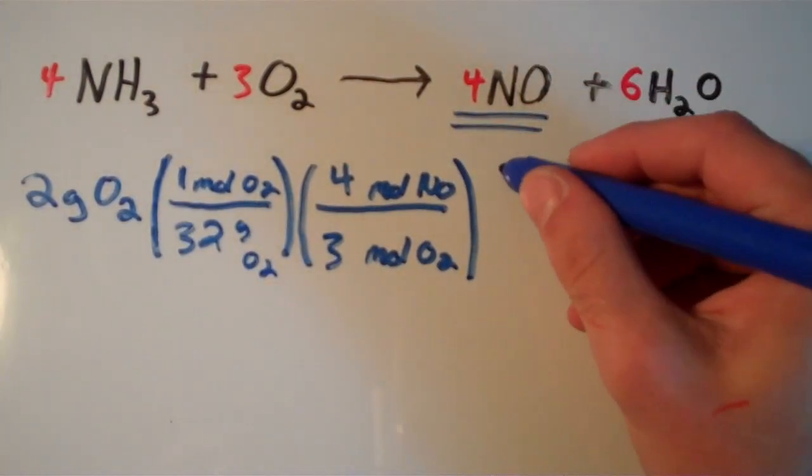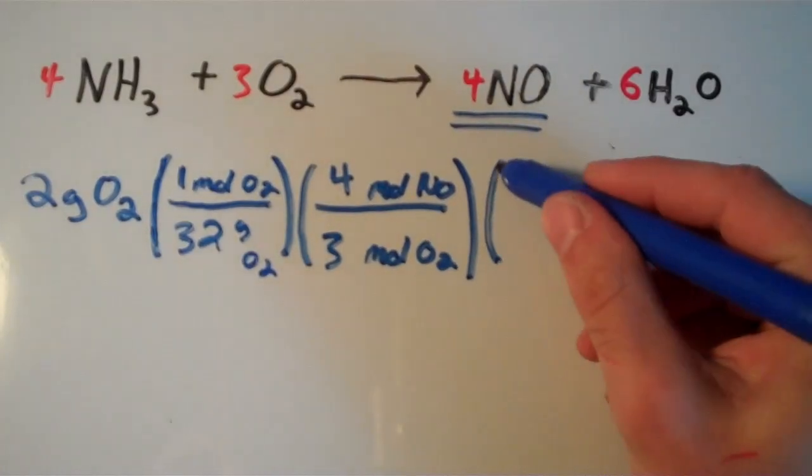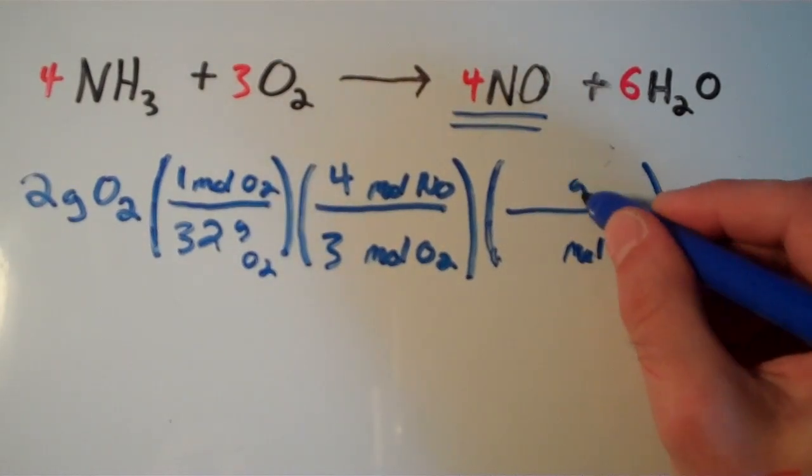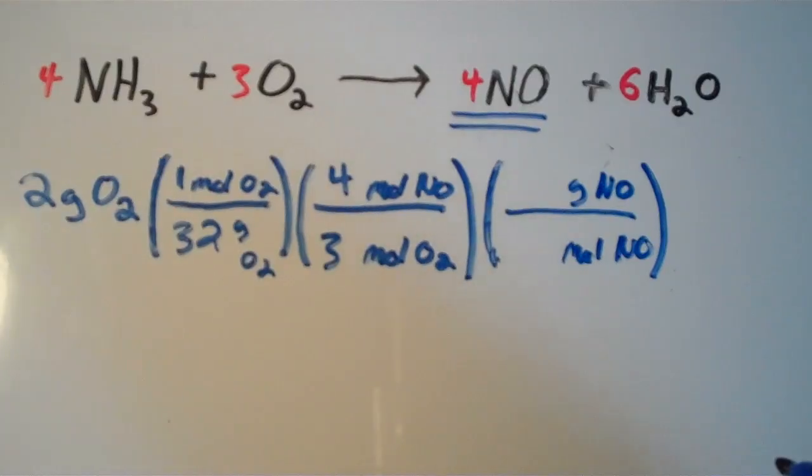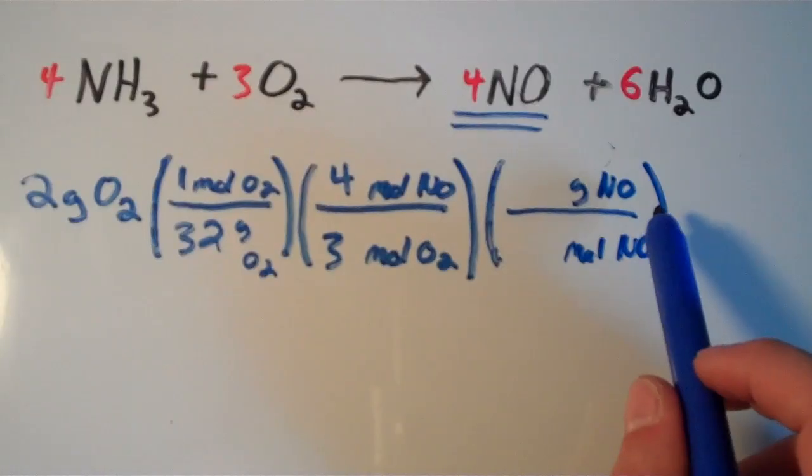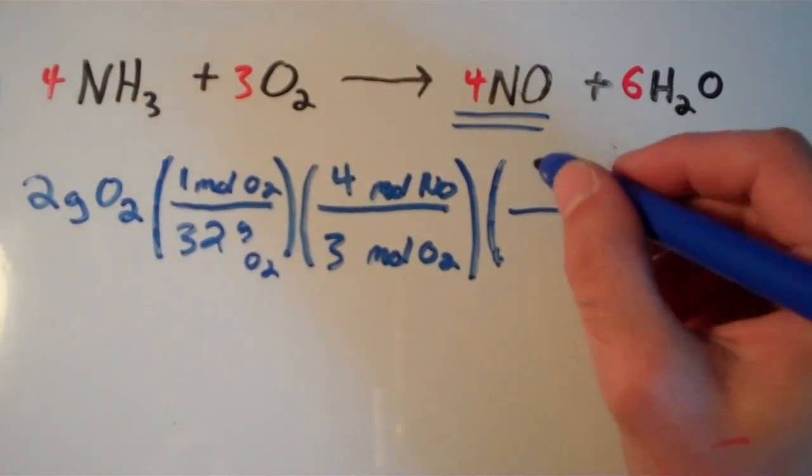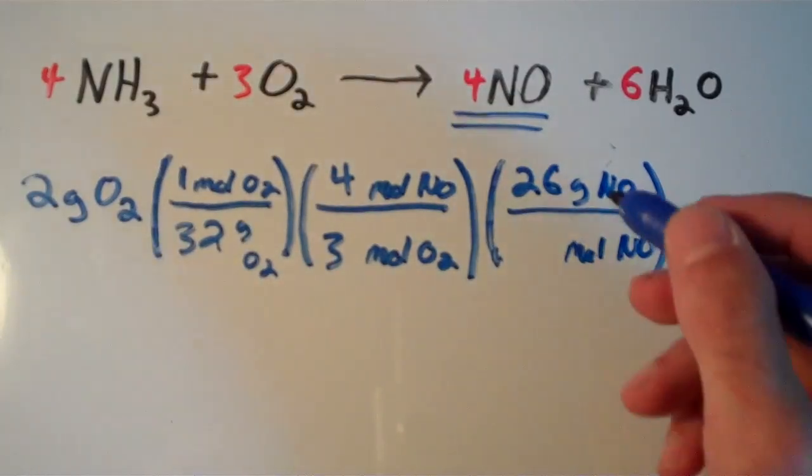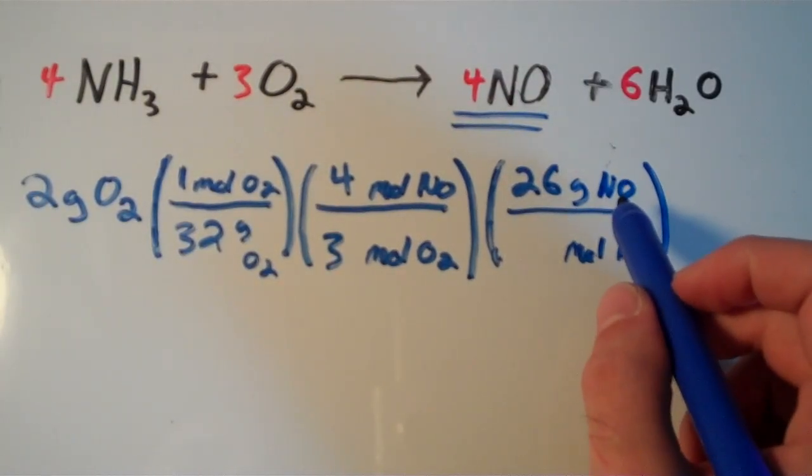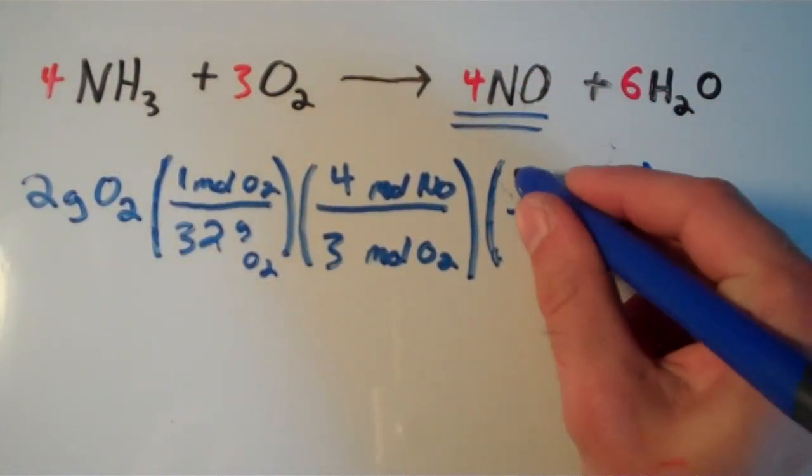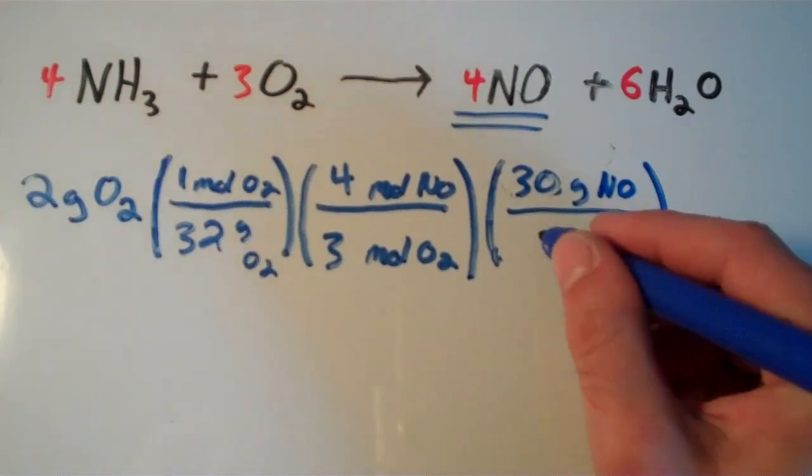We have moles of NO, but we want the mass of NO. That means we take moles of NO and convert that into grams of NO. If you calculate the molar mass of NO, it's going to be 14 plus 16, which is 30 grams for one mole of NO.